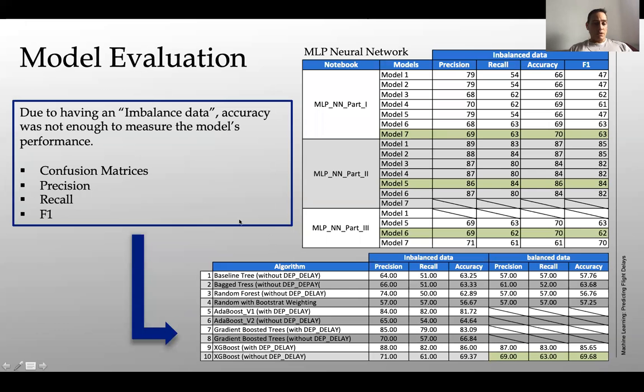That takes us to the model evaluation. Because this is an imbalanced data, accuracy was not going to be enough to evaluate the performance of the models. So I had to generate confusion matrices, calculate precision, recall, and F1, which are all associated to the confusion matrix.